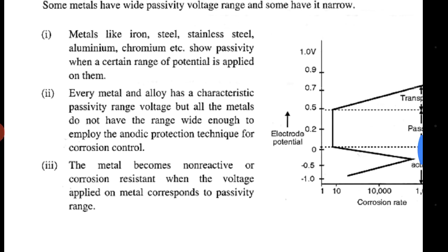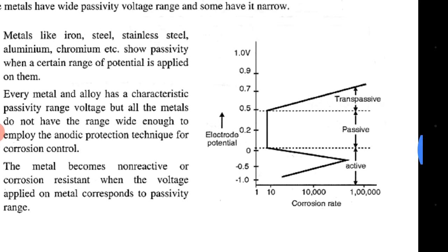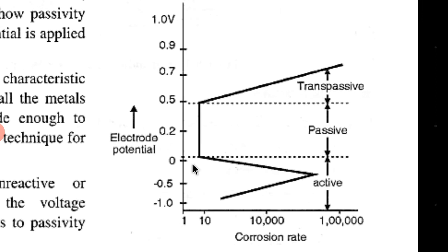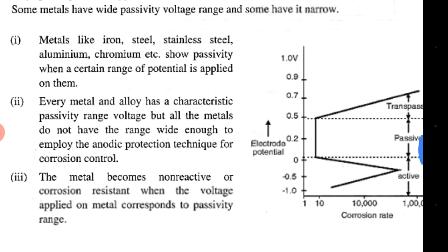Every metal and alloy has a characteristic passivity range voltage, but not all metals have a range wide enough to employ the anodic protection technique for corrosion control. Not all metals show this wide passive range — most metals show a very narrow range where maintaining that particular potential becomes difficult.